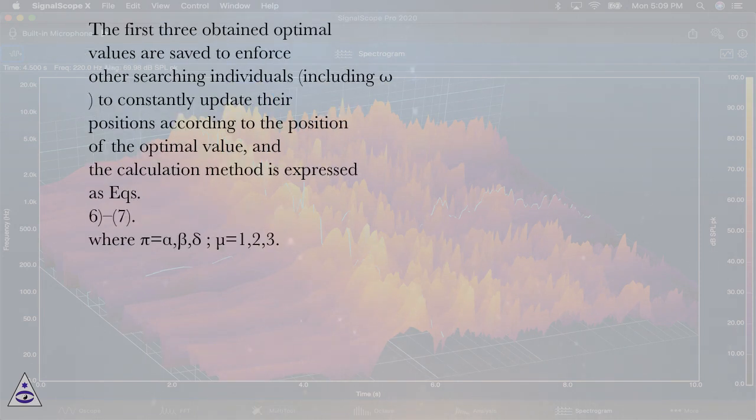The first three obtained optimal values are set to enforce other searching individuals, including omega, to constantly update their positions according to the position of the optimal value, and the calculation method is expressed as equations (6-7).